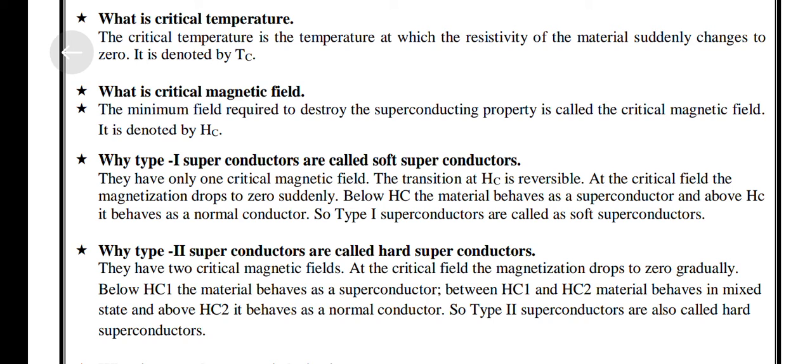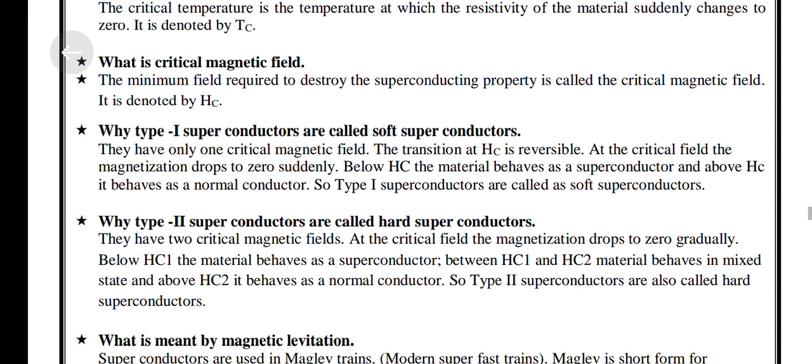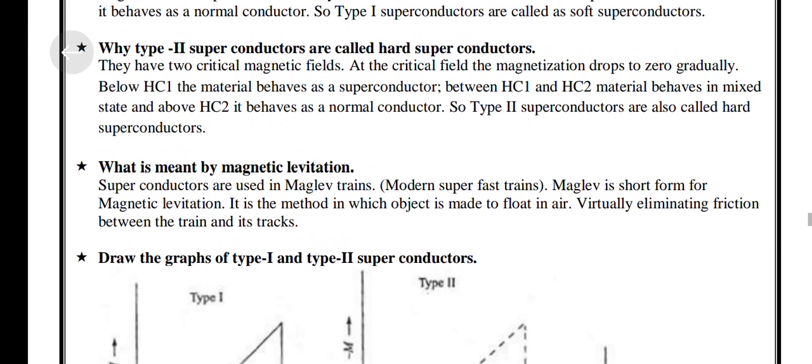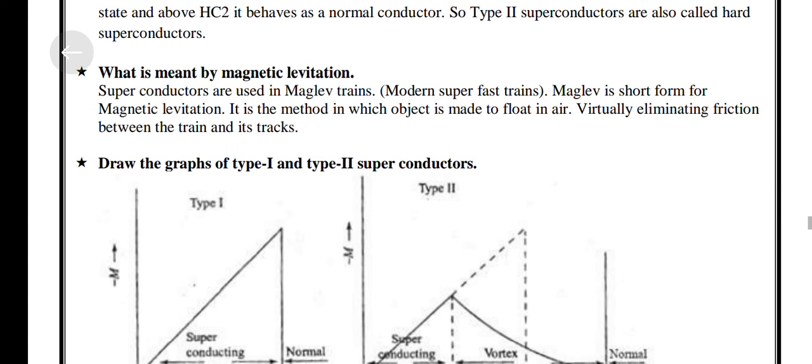Why are Type 1 Superconductors called Soft Superconductors? Why are Type 2 Superconductors called Hard Superconductors? What is meant by Magnetic Levitation?